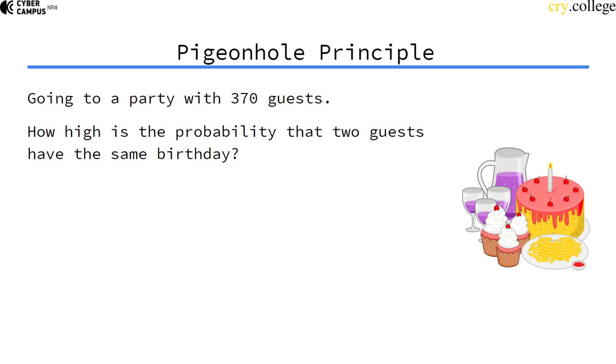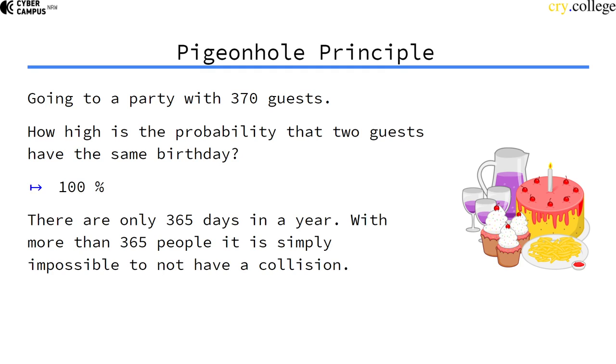Maybe counter-intuitively, this probability is one—it's 100%—because a year just has 365 days. So with more than 365 people, it's simply impossible to not have a collision for a birth date.